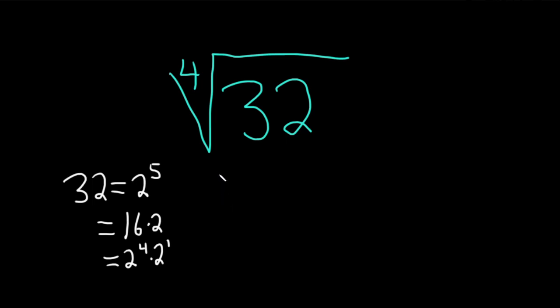So let's go ahead and go back to our original question and replace the 32 with what we've done here. So this will become the fourth root of 2 to the fourth times 2.